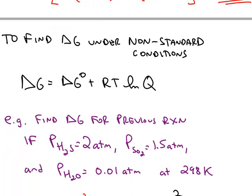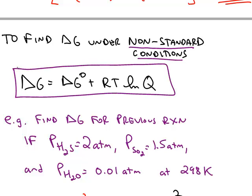We can also calculate delta G if we change from standard to non-standard using this equation, which has the reaction quotient Q, just like we saw when you did equilibrium. Q has exactly the same form as K. The only difference is you use the initial values instead of the equilibrium values.